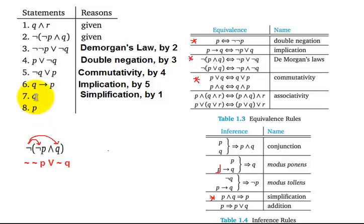Well, look at here. From line 7, we've got Q. In line 6, we've got Q implies P. That looks like another application of modus ponens. And this concludes the proof sequence.